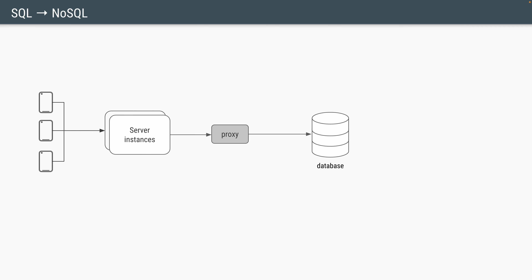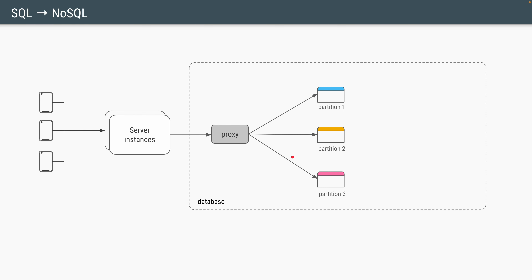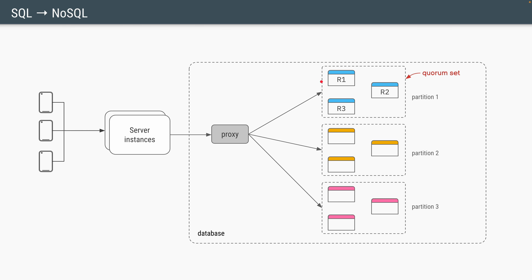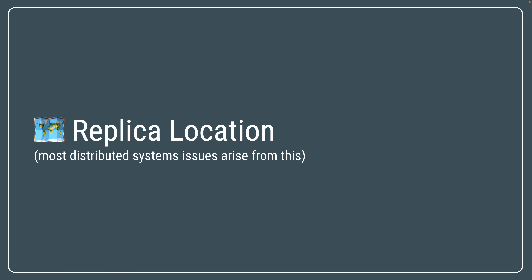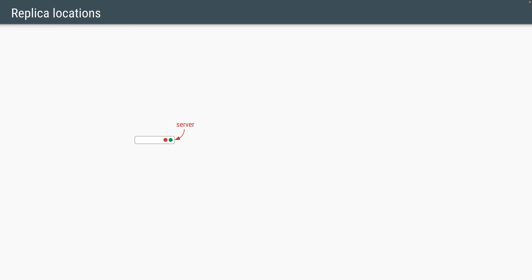In the last video we saw an architecture of a typical NoSQL database where the database was split into multiple partitions. There was a component called proxy which was responsible for routing the requests based on a column called partition key, and each of the partitions had multiple copies of the data called replicas for fault tolerant purposes. Now let's try to understand CAP theorem in the context of this architecture. Before we jump into that, we need to understand where these replicas are actually located, because that will have major implications on the theorem itself.